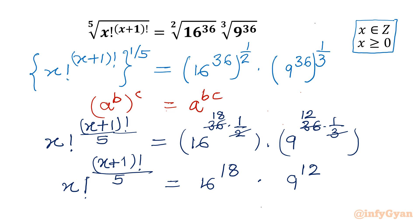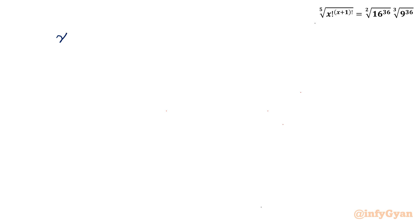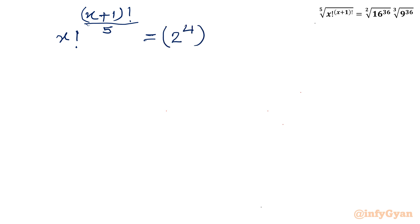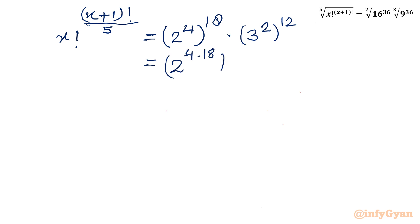Now we can write our bases as base 2 and base 3 respectively. I will write x factorial raised to the power x plus 1 factorial divided by 5, equal to 16 power 18. We can write 16 as 2 power 4, whole power 18. And we can write 9 as 3 squared, whole power 12. Now using the same property, we get 2 raised to the power 4 times 18, and 3 raised to the power 2 times 12.